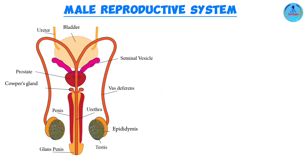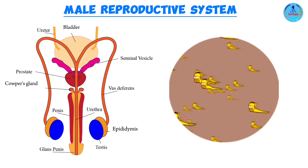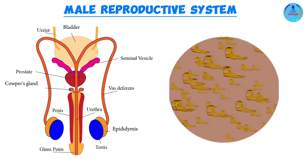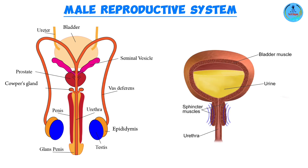Two interesting facts to conclude. First, semen contains roughly around 100 million sperm cells per cubic centimeter, meaning a single ejaculation can contain more than 200 million sperm cells. Second, although the urethra is a passage for both urine and semen, urine is not released during ejaculation because the body undergoes a process called sphincter closure — the urinary sphincter, a ring of muscles at the base of the bladder, contracts, preventing urine from being released and ensuring that only semen is expelled through the urethra.